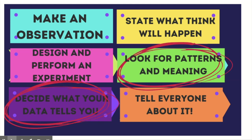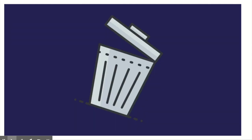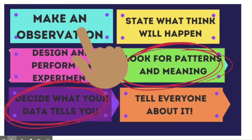What if you draw conclusions from your data and realize your hypothesis was not supported? Do you just stop and say you were wrong and throw everything away? No — that's not how science works. The observations you made while looking at that data allow you to go right back to the first step and start all over again. This process can take a variety of different paths. When our initial hypothesis is not supported, we don't quit — we go back, do the process again, and then tell everyone about it.